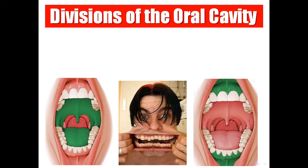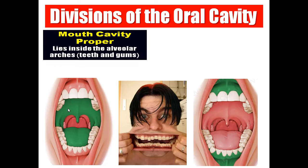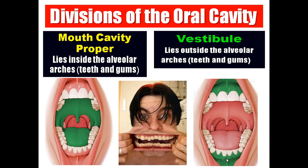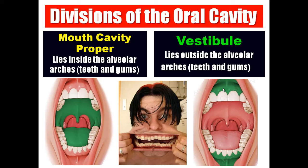Regarding the division of the oral cavity: it is divided into the oral cavity proper, or mouth cavity proper, which lies inside the alveolar arches — inside the teeth and the gums — and the vestibule, which is the space outside the alveolar arches. So oral cavity proper is inside the alveolar arches, and the vestibule is outside the alveolar arches.